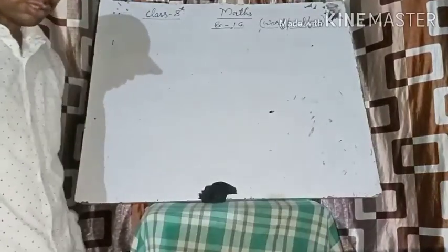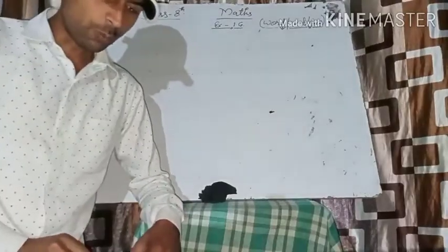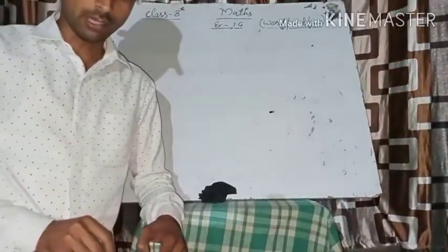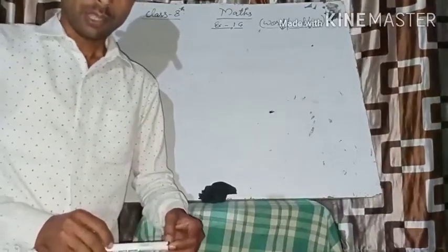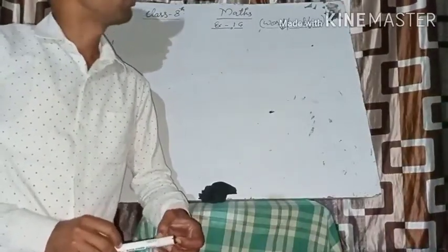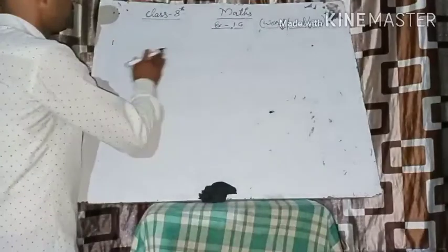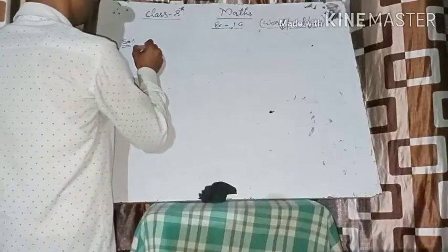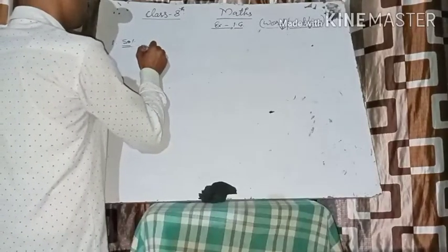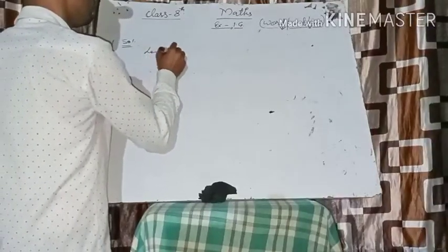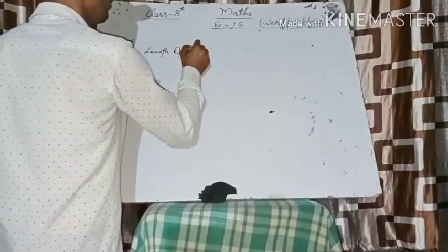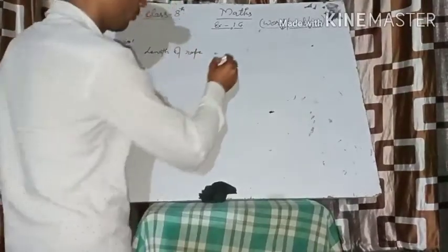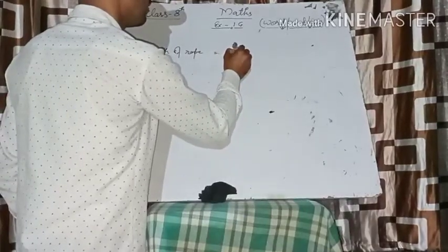Exercise question: From a rope 11 meters long, two pieces of length 2 and 3 upon 5 meters and 3 and 3 upon 10 meters are cut off. What is the length of the remaining rope? Solution: the length of the rope equals 11 meters.